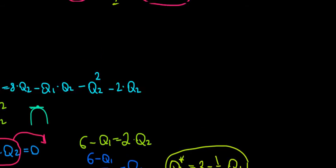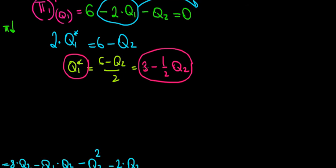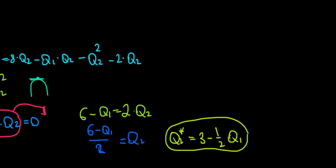This is the reaction function for the second player: Q2 = 3 - (1/2)Q1. Notice it is symmetrical to the first player's reaction function, Q1 = 3 - (1/2)Q2. They are symmetric because both firms are rational and decide simultaneously — that's why they end up with the same reaction function. To finish, we substitute one reaction function into the other to solve for the equilibrium quantities.